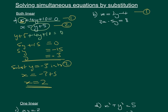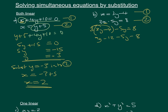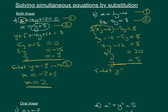Let's do the second linear example. We label them equation 1 and 2. We've got x equals 3y minus 4, so instead of x we write 3y minus 4, giving us 3 times (3y minus 4) minus 5y equals 8. Expanding: 9y minus 12 minus 5y equals 8, so 4y equals 20, y equals 5. Substituting back: x equals 15 minus 4, so x equals 11.